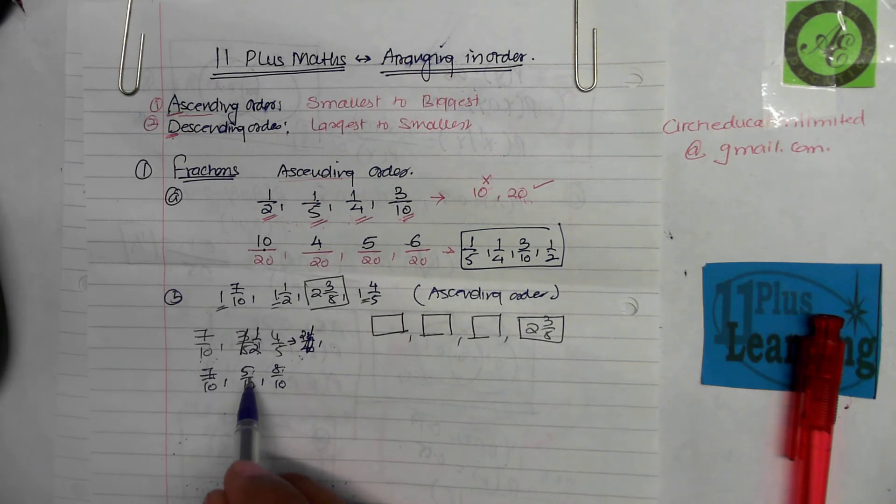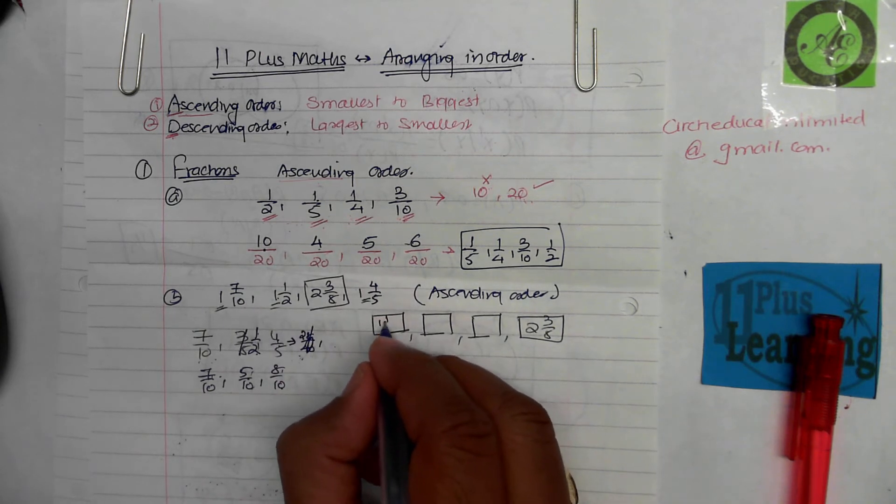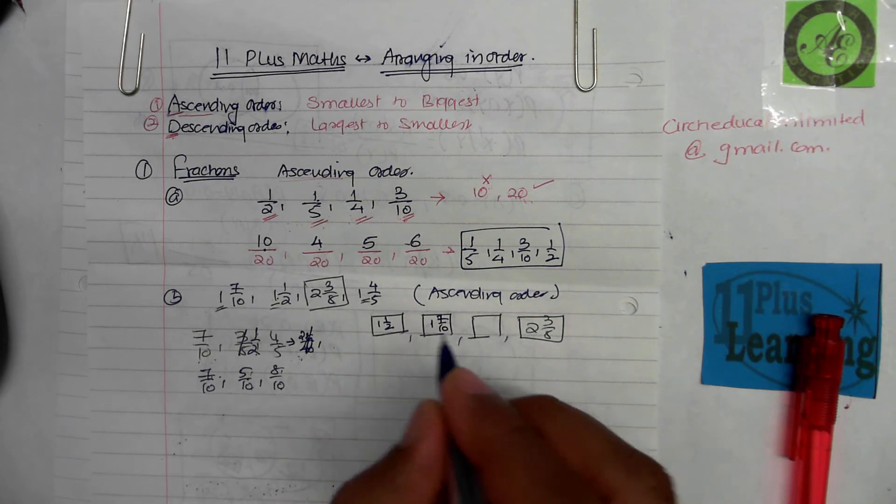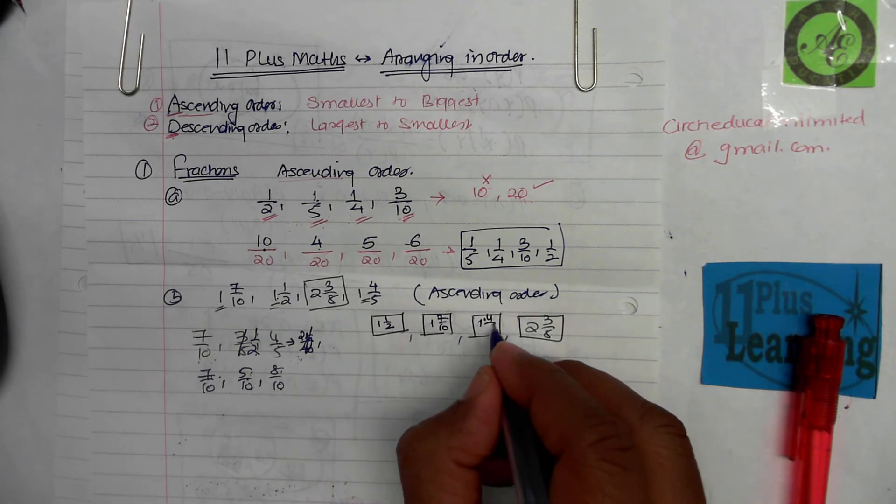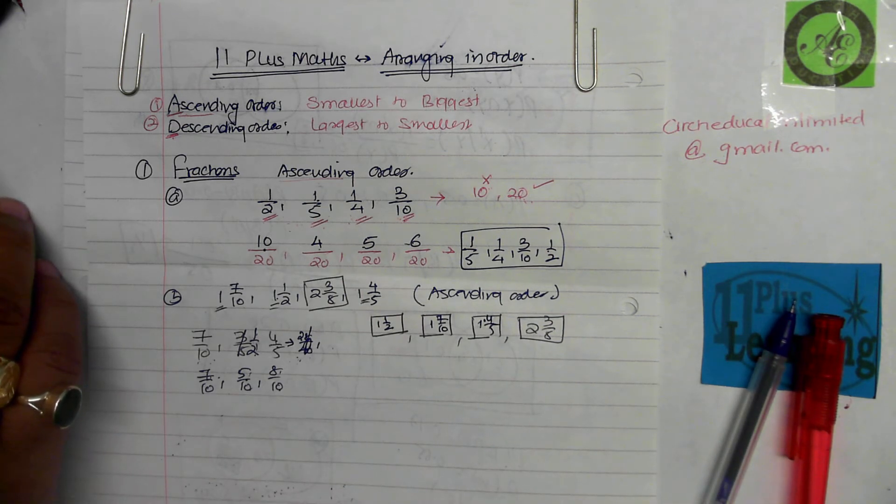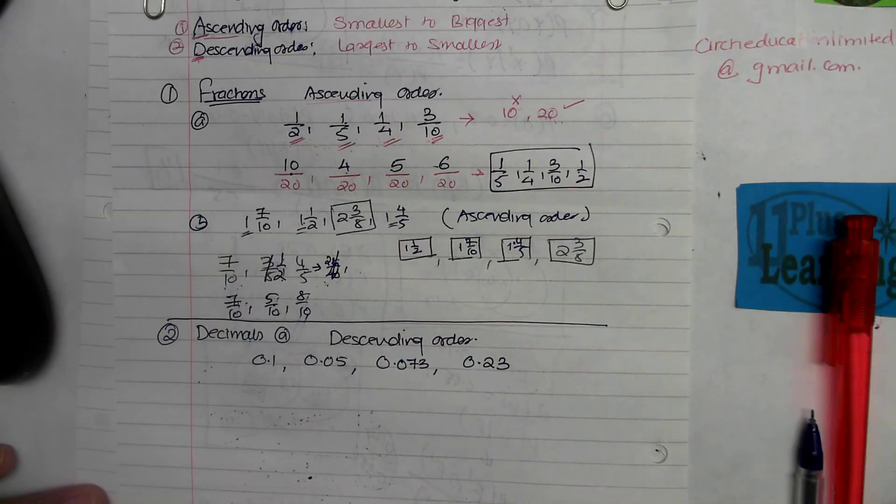So five comes first, then the seven, then the eighth. That means one and a half, then one and seven-tenths, then one and four-fifths, and then obviously two and three-eighths is already placed there. So this is how we put them in ascending order.